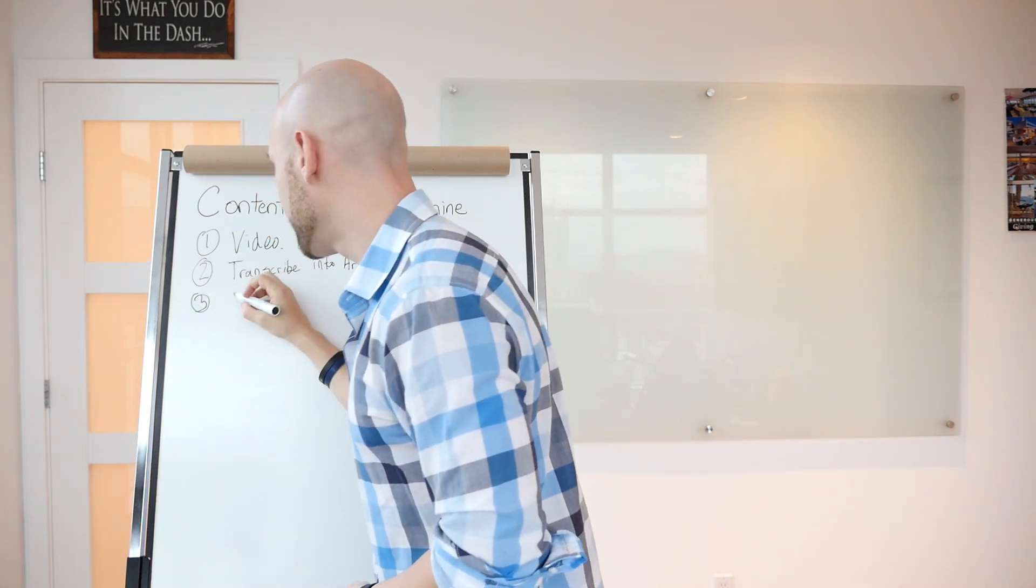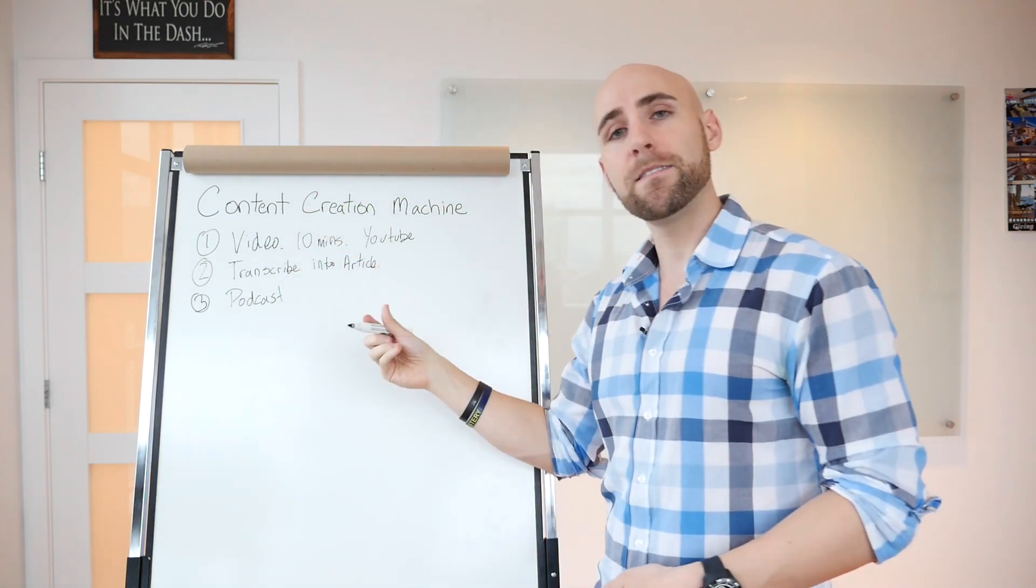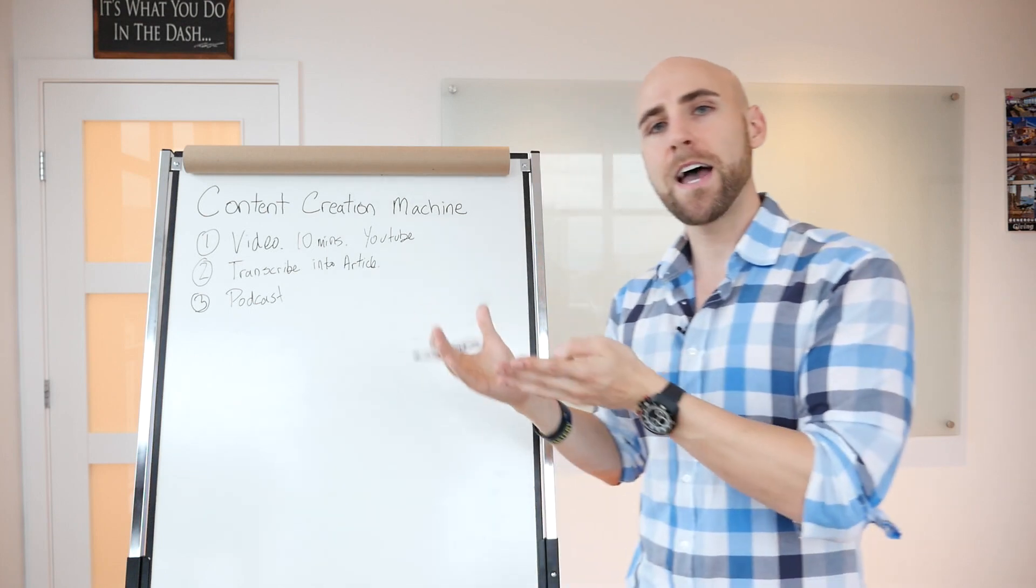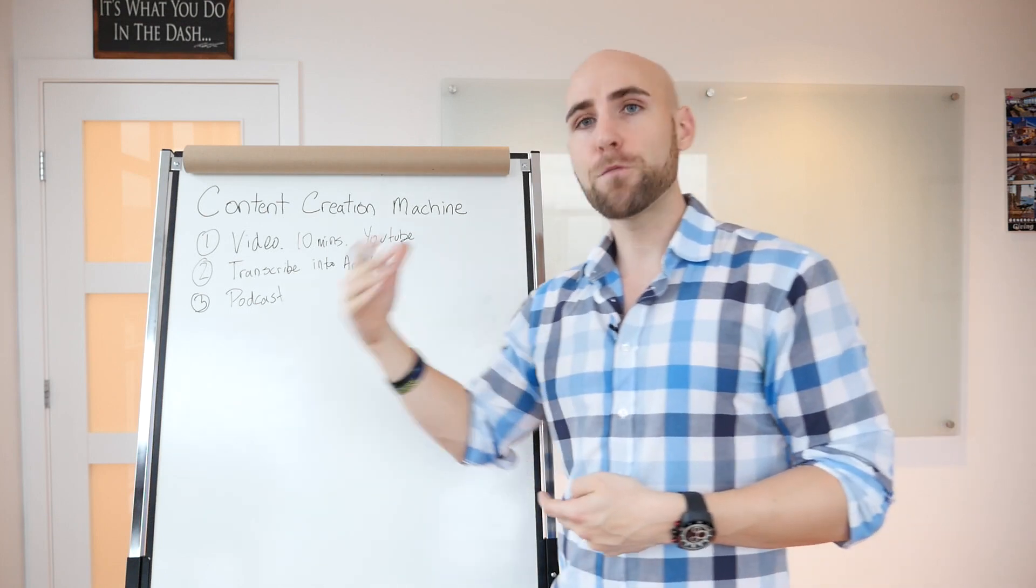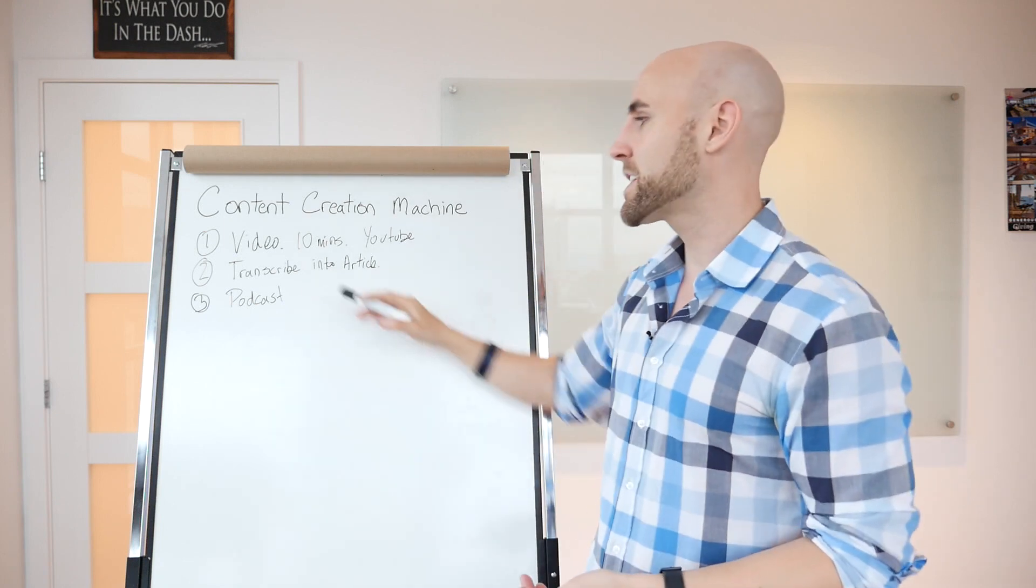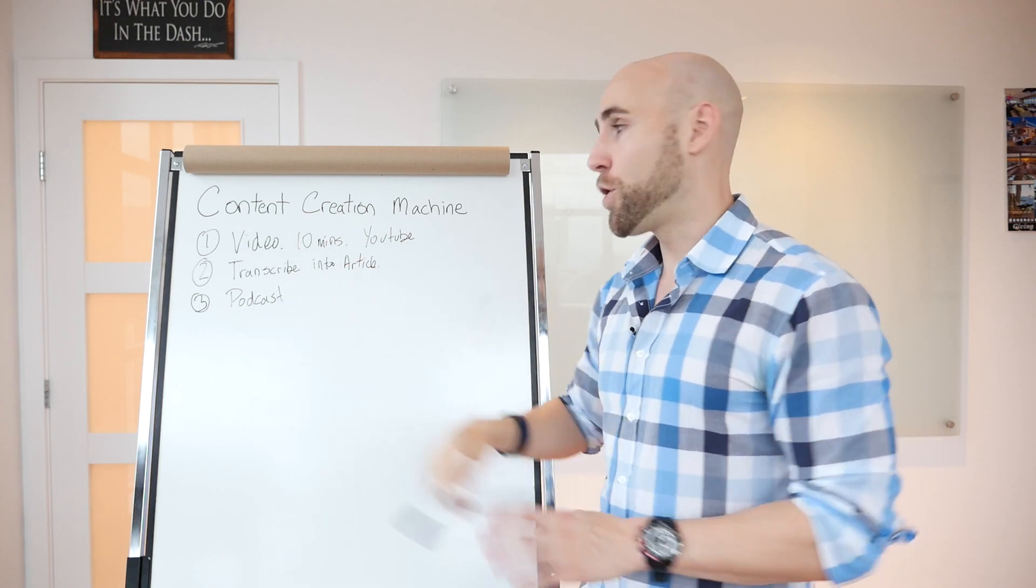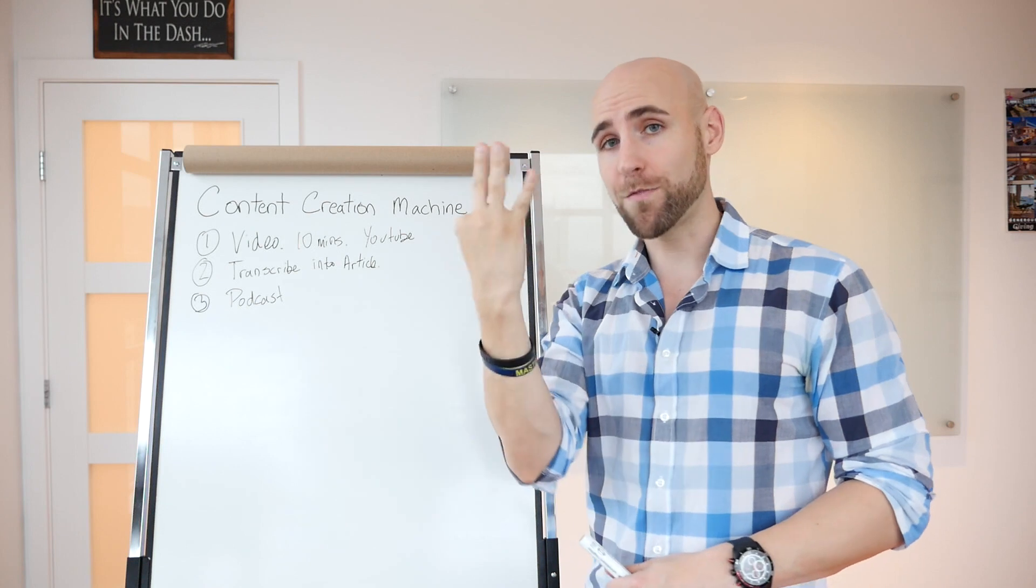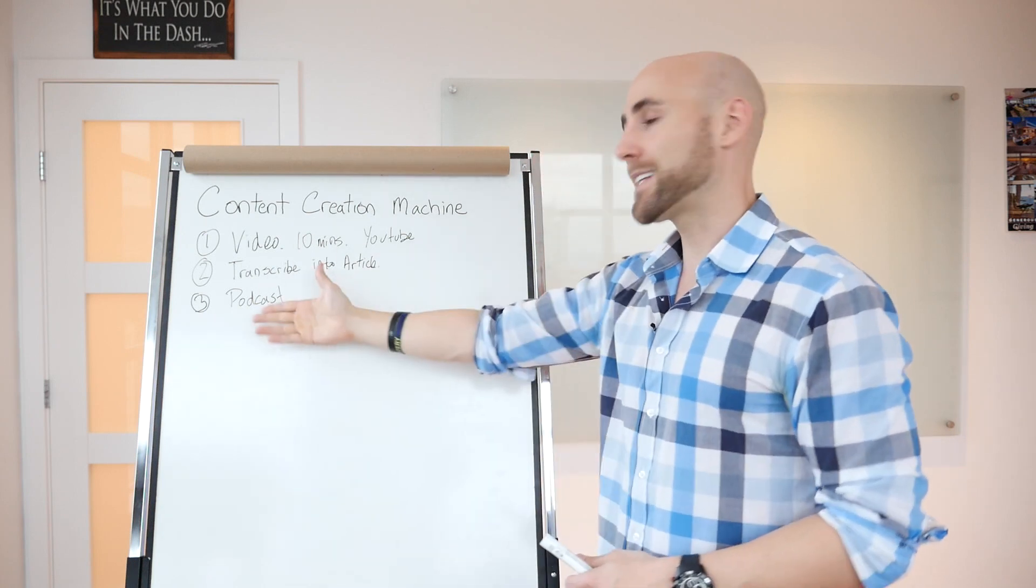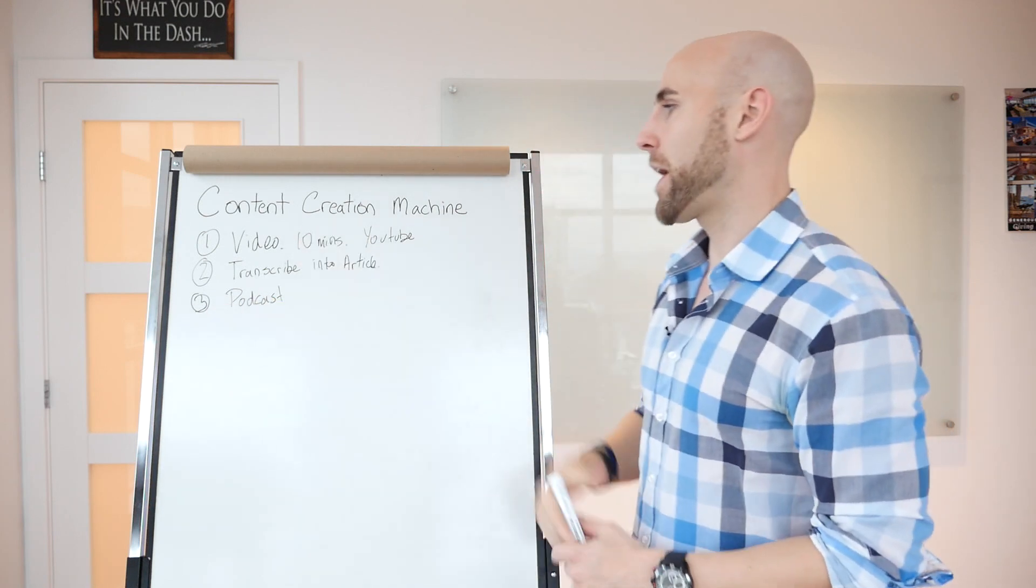The third step is we take the audio from this video and we're going to turn that into a podcast. Take the 10-minute audio, have somebody that adds an intro and an outro to that, and then puts that up on iTunes. Now all of a sudden, you have another piece of content, a podcast that's on iTunes that a lot of people can find you from and consume your content that way. We also embed the podcast on the blog post. On the blog post, we have an article, the video embedded, as well as the podcast embedded. Very powerful. This one video already is three forms of content.